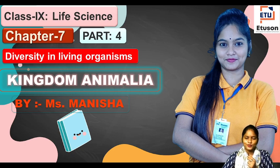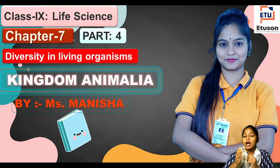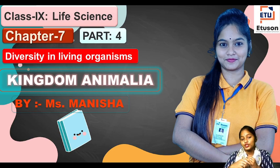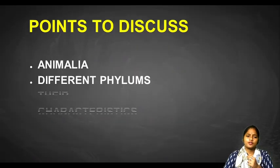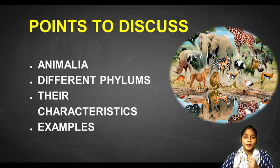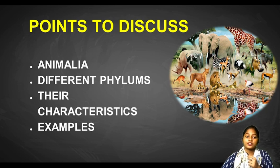So today we are going to study about animals. There are different types of animals we see around us, so how they are divided into different phylums or different groups — that is what we are going to discuss today. In today's part we will be discussing about Animalia, meaning different types of groups they are put into, their characteristics and examples.